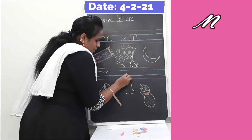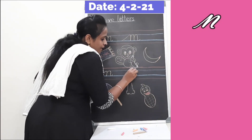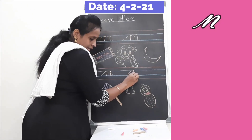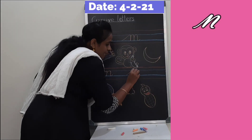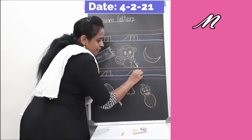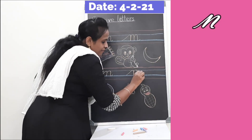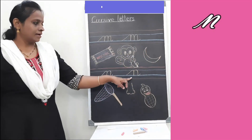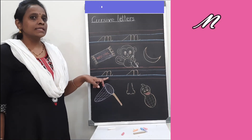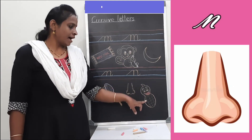One more time. From the second blue line, go up and touch the first blue line with a slanting line. Take a curl, come down with a standing line, touch the second blue line. Go up, take a curl, touch the first blue line, come down with a standing line, touch the second blue line with a small tail. Cursive N. N sounds N. N for net, N for nose, N for nut.